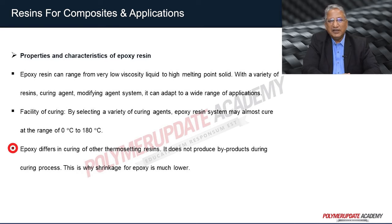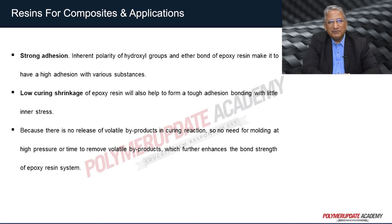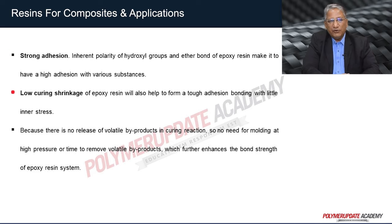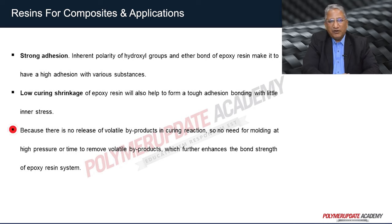Epoxy resin does not produce byproducts during the curing process, which is why shrinkage is much less. Another property is strong adhesion: the polarity of hydroxy groups and ether bonds make it have high adhesion on various substances. Low curing shrinkage also helps form tough adhesion bonding with little internal stress. Because there is no release of volatile byproducts in the curing reaction, there is no need for molding at high temperature and pressure, which further enhances the bond strength of epoxy resin systems.